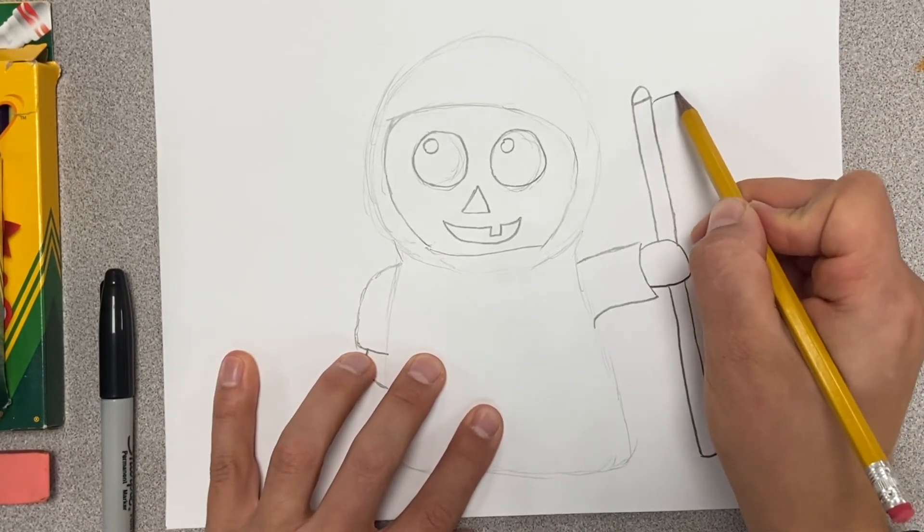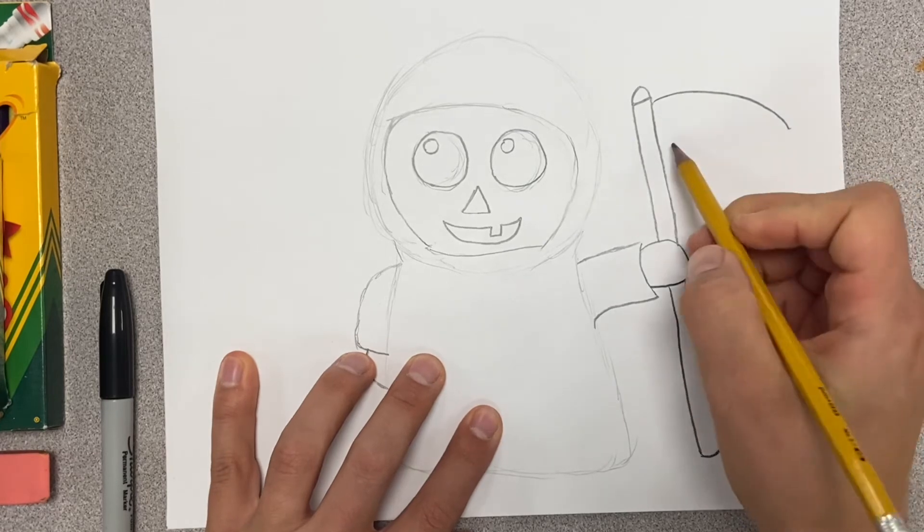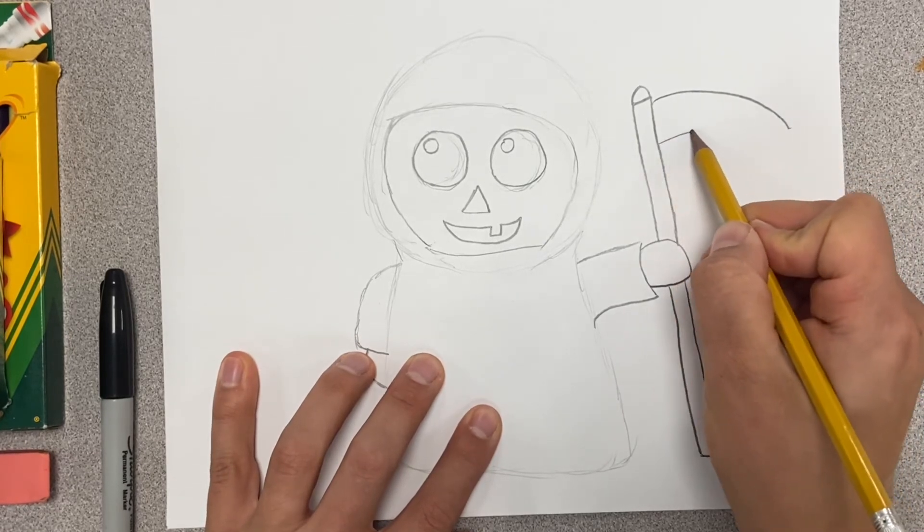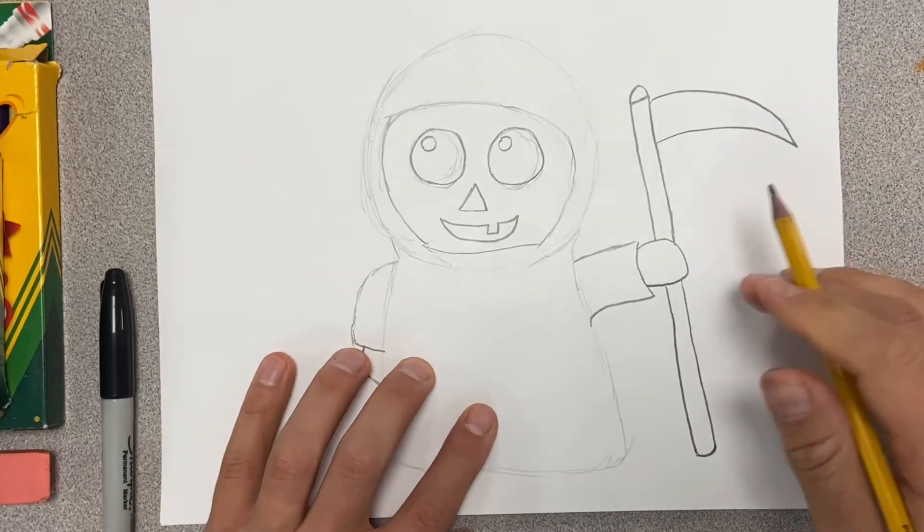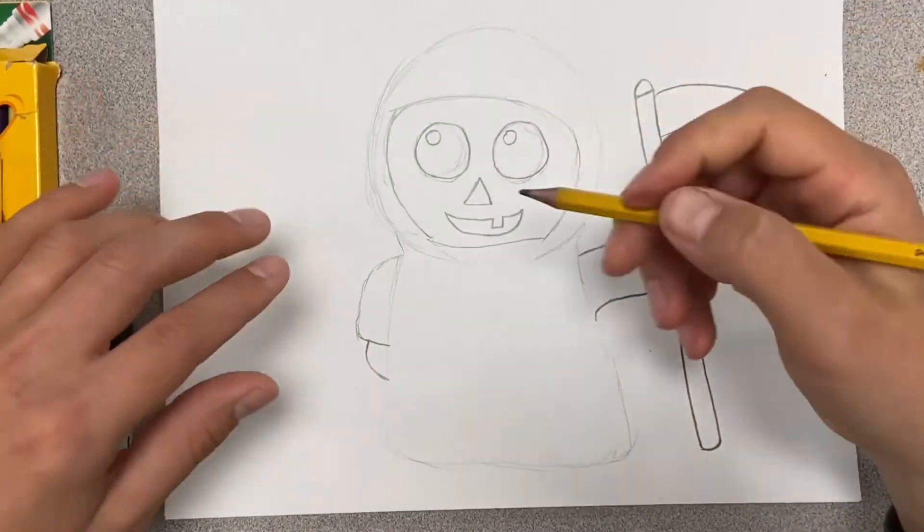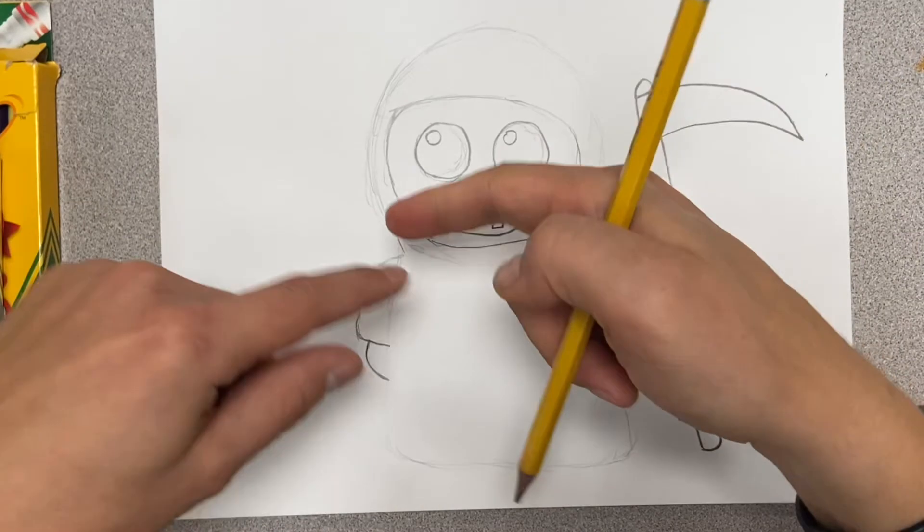And then from this curvy line going down, this one also curvy line going down to a point. Nice, I like that. I'm gonna outline that in sharpie and then be thinking about not only how I'm gonna color it in but what I'm gonna do in the background too. So let's go through that really fast.